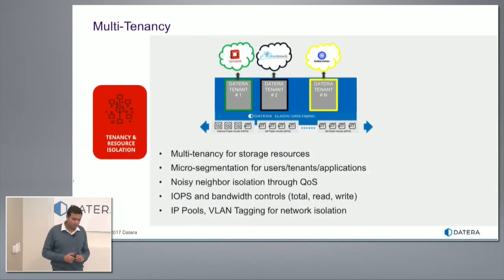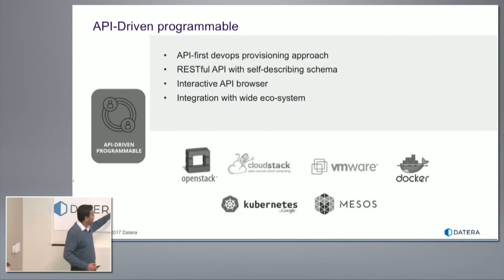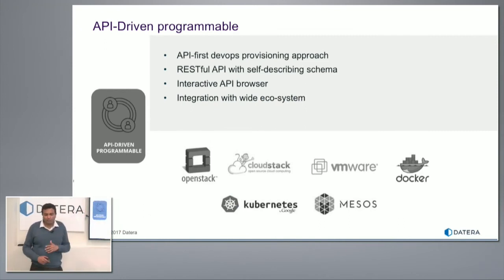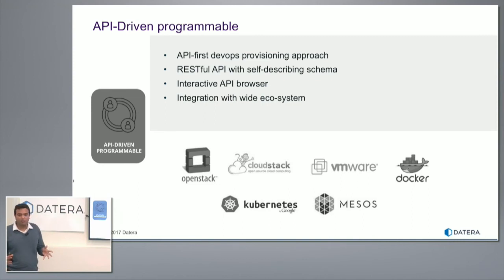Micro-segmentation at the tenant and application level is supported — a service provider customer or tenant can have separate applications within their environment, each with its own QoS segment. You can do isolation by IP blocks, by tenant definition on the system itself, or by volume — multiple ways to segment. Tenancy really means it could be an application, a user, or a tenant in the classic sense. Our system is designed with an API-first approach — everything in the system is API-controllable, and the UI is built on this API.